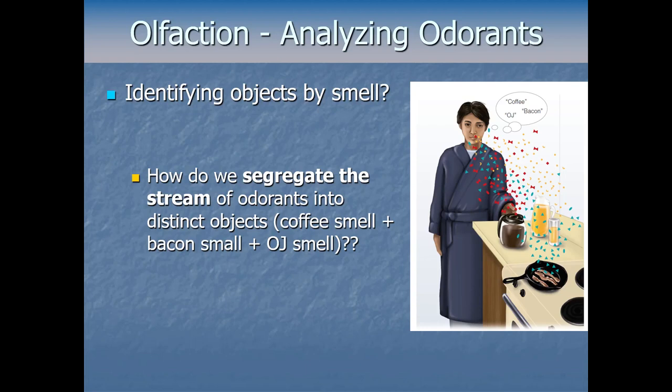This is the same question we asked with audition — the brain gets a complicated jumble of sounds at all frequencies hitting the ear at once, and has to segregate them into distinct streams, which we called auditory stream segregation. Same issue in vision: through gestalt principles, the brain guesses what is one object versus another. The smell system faces the same challenge of stream segregation — identifying individual objects despite getting a jumbled mess of mixed input at the detectors.